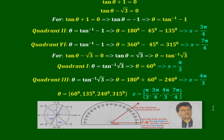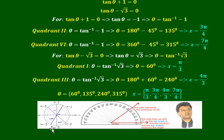Here is the picture format summary: first quadrant 60° (π/3), second quadrant 135° (3π/4), third quadrant 240° (4π/3), fourth quadrant 315° (7π/4).